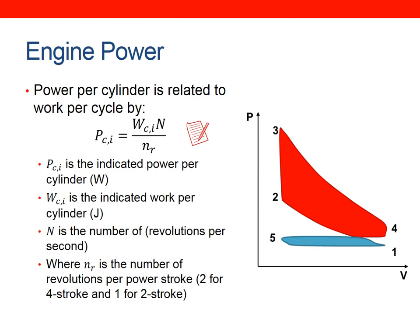If we have work, we can convert it to power: power equals work times speed divided by nR, where nR is the number of revolutions per power stroke. For a four-stroke engine, nR equals 2 (two crankshaft revolutions per power stroke); for a two-stroke, nR equals 1. Be careful of units: if power is in watts, work should be in joules and speed in revolutions per second.